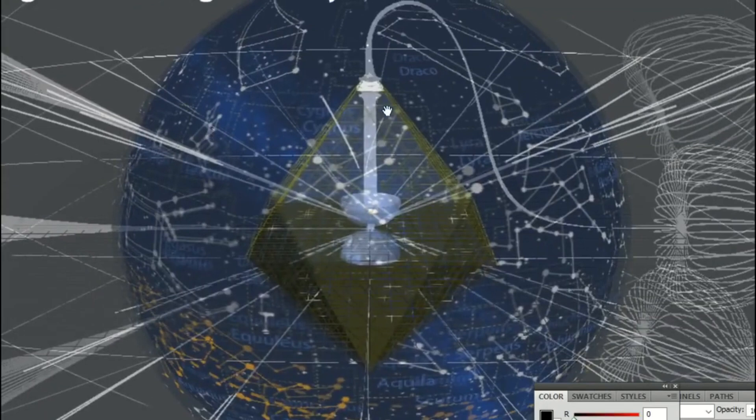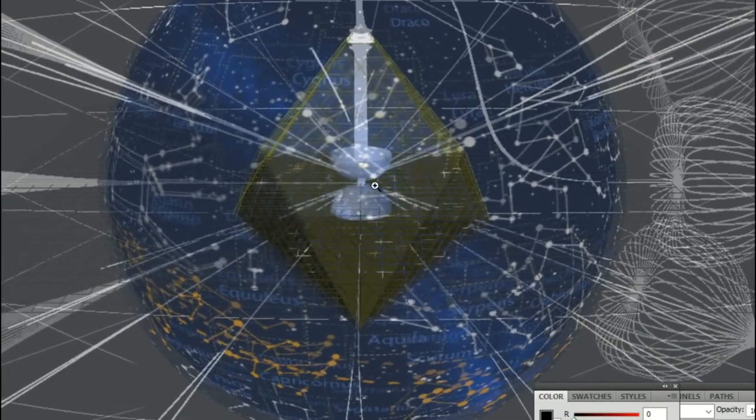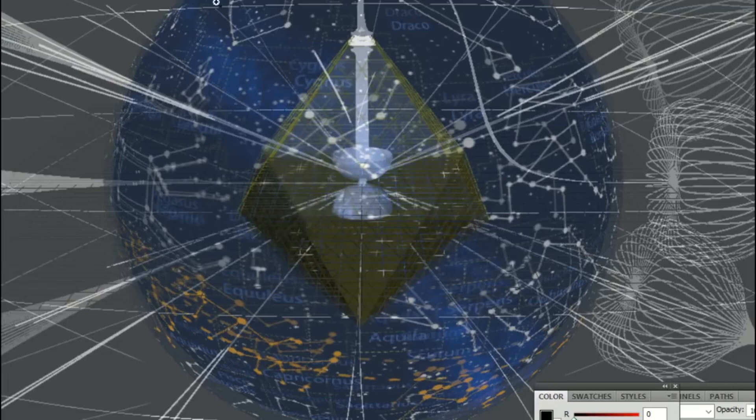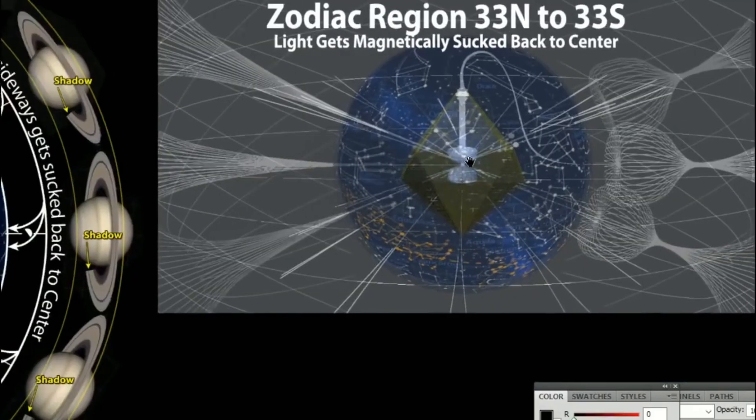Zodiac region, 33 north and 33 south. You see these return lines, all returning to the Primer Field Tree of Life. That's why we get the zodiacal region. It's not more than 33 because the light is going to be flaring out a little bit more as it gets further away. That's why the moon goes a little bit more than 23.4 each way. It's about 5 degrees each way.